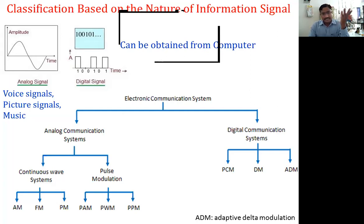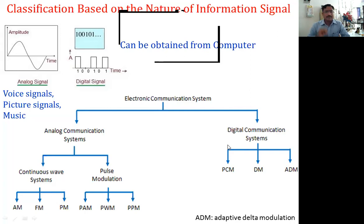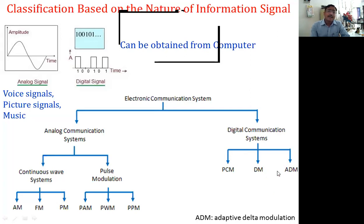When we have a digital signal, the communication system is called a digital communication system. The digital communication system can be categorized into three parts: PCM — pulse code modulation, DM — delta modulation, and ADM — adaptive delta modulation.